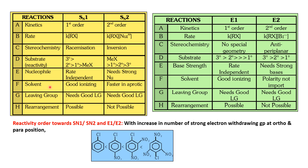Regarding solvent: SN1 favors ionizing (polar protic) solvents; SN2 is faster in polar aprotic solvents. A good leaving group makes the reaction easier. Rearrangement is possible in SN1 but not in SN2.